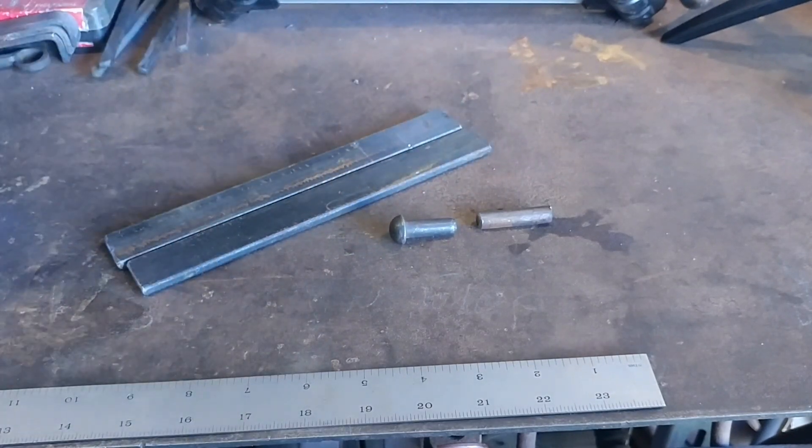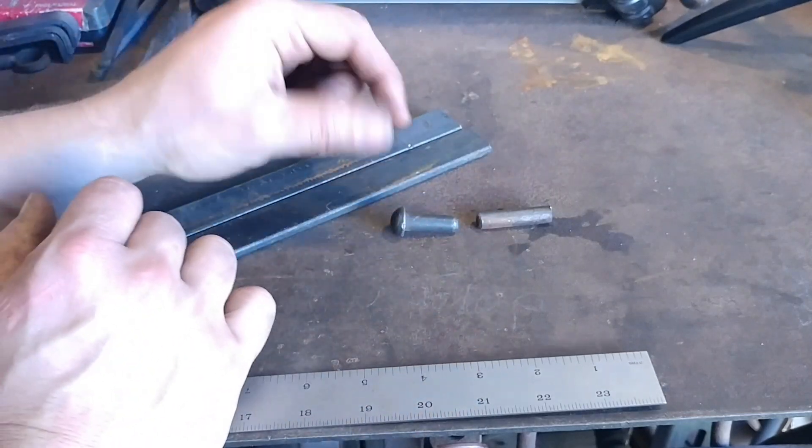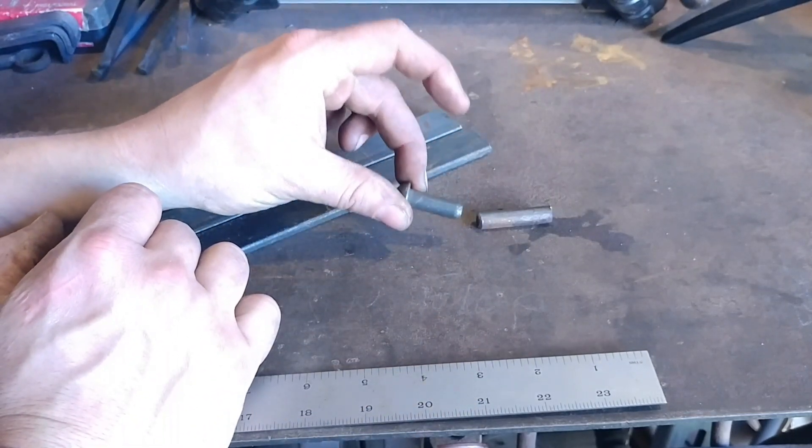Well, factory made rivets come in all sorts of different lengths and sizes and diameters.